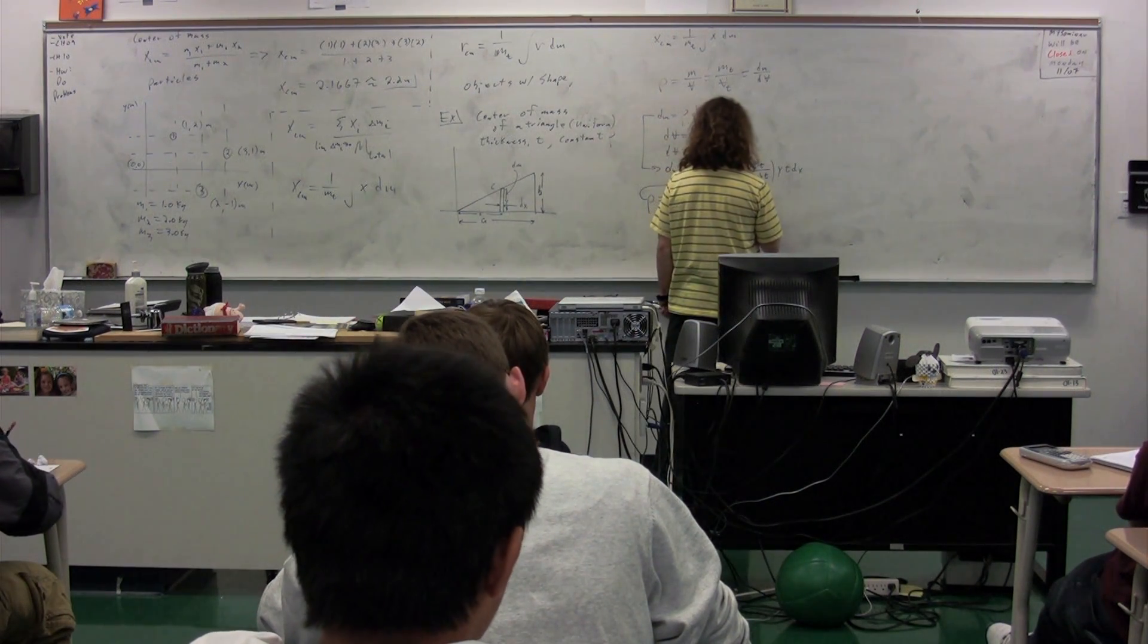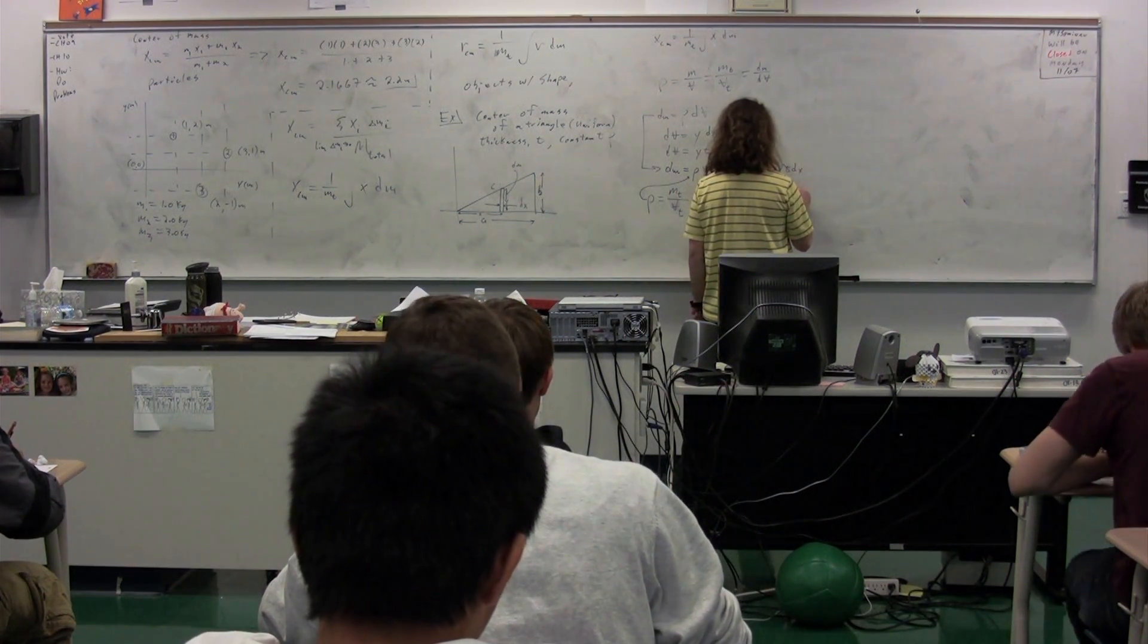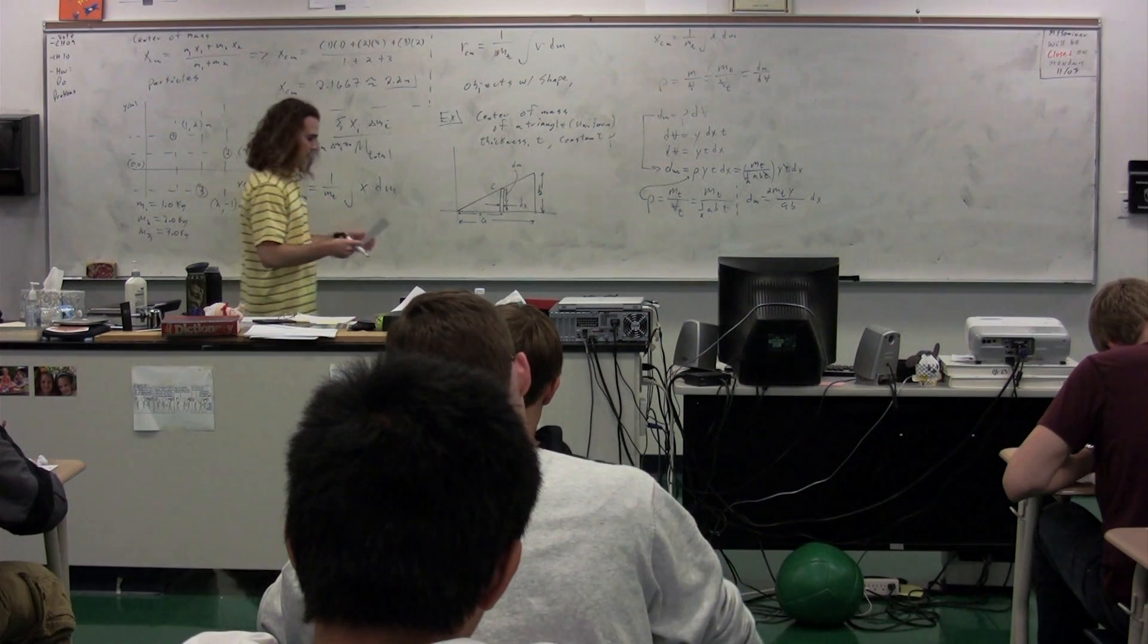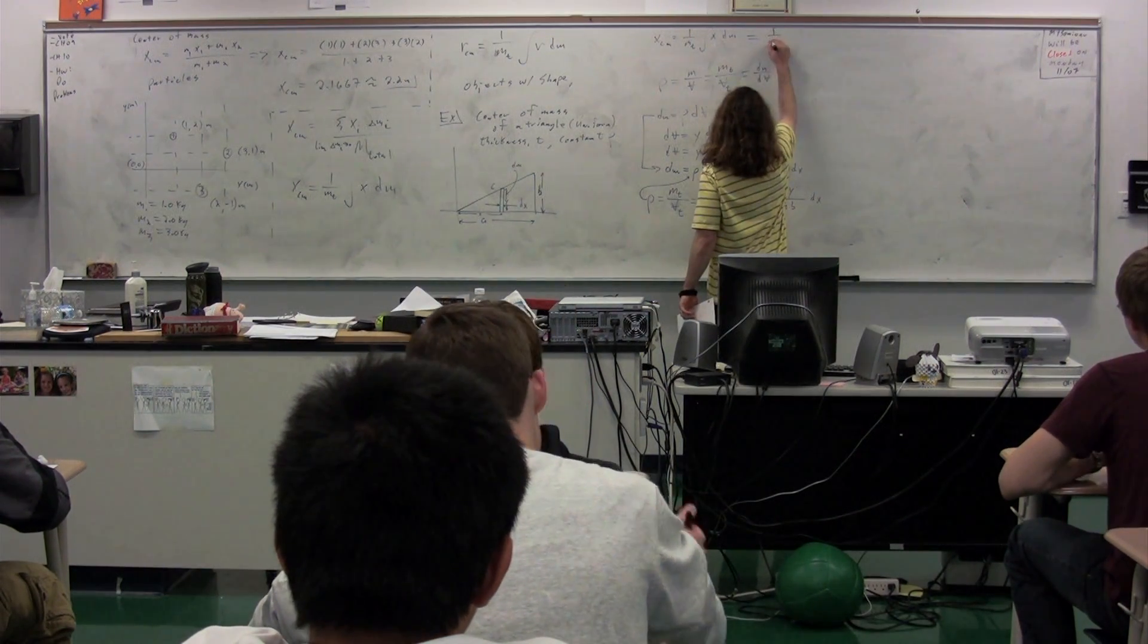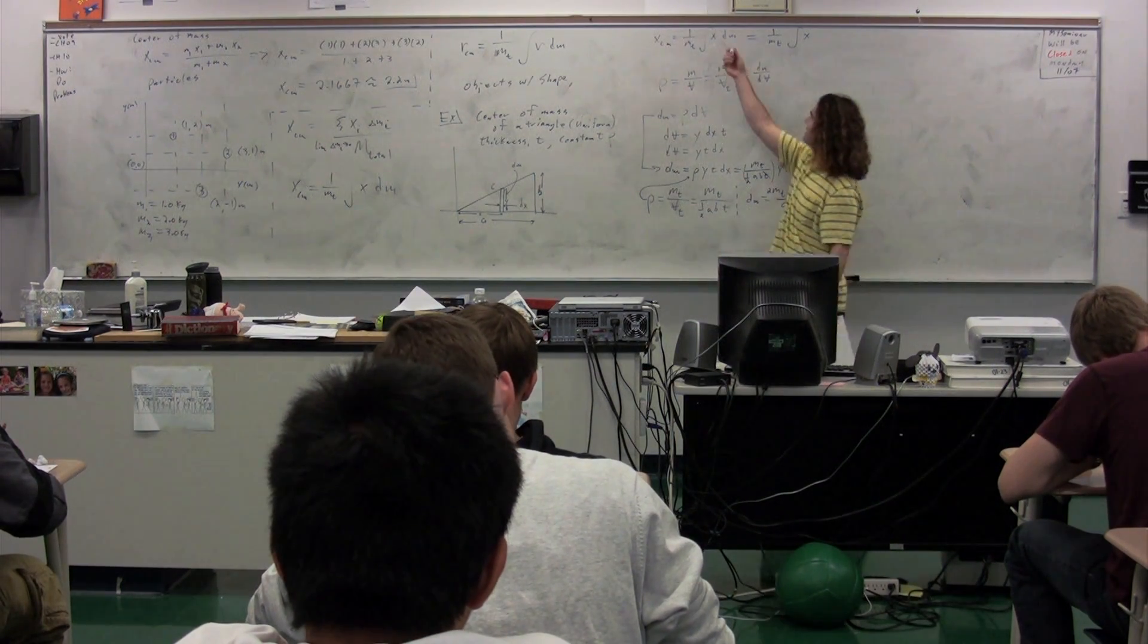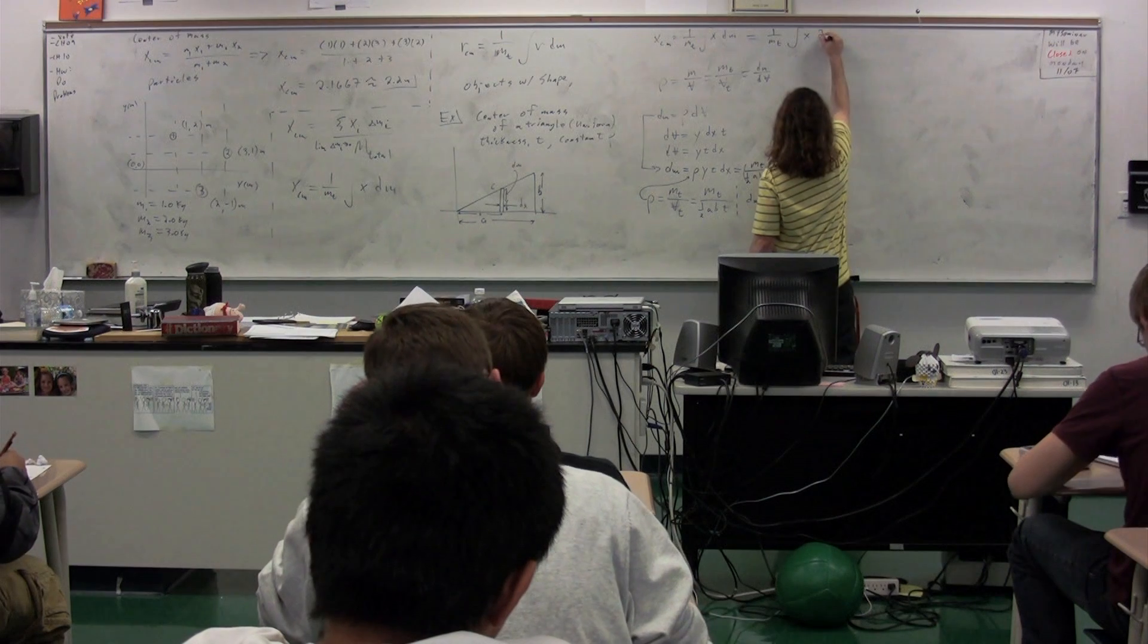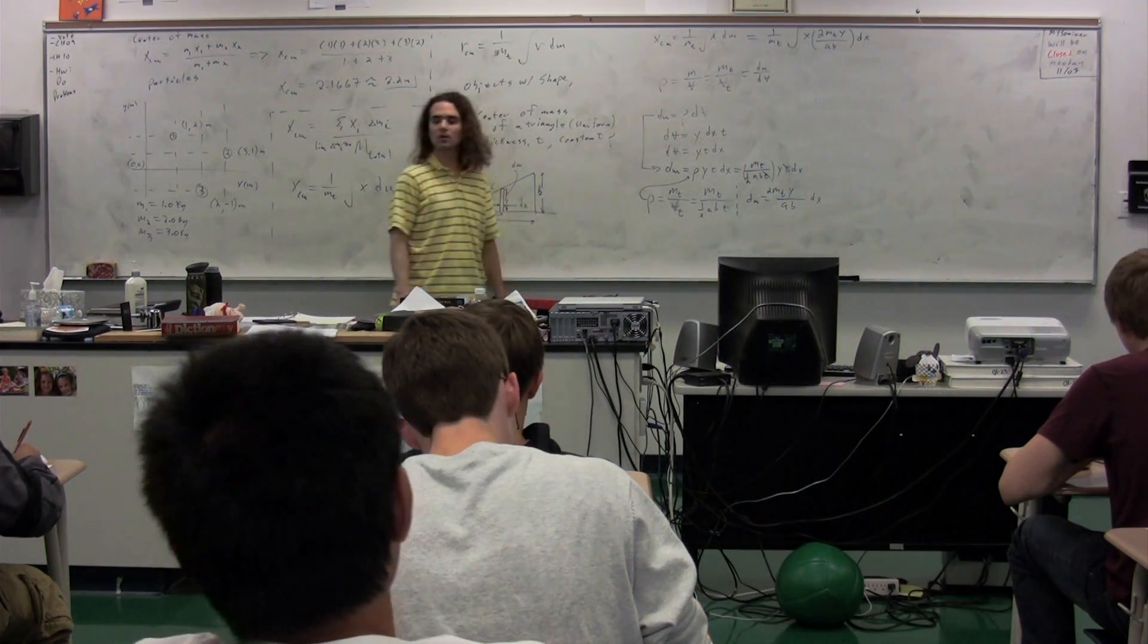In other words, dm is equal to, looks like a t cancels out, and we get the total mass times y divided by, actually we'll do two times the total mass times y, divided by ab times dx. So, we come back up to our general equation. We still have one over mass total, the integral of x. We haven't done anything with that. But everything we did right here was to go from dm to dx. Because we couldn't integrate with respect to dm, but we can integrate with respect to dx. We can integrate with respect to x.